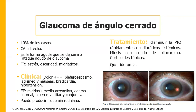El glaucoma de ángulo cerrado es la crisis aguda del glaucoma, que se da solo en el 10% de los casos. Se da por una cámara anterior estrecha o canales de drenaje cerrados. Los factores de riesgo son estrés, oscuridad y midriáticos. Hay que tener cuidado porque si instalamos colirios midriáticos como fenilefrina o atropina para hacer un fondo de ojo a un paciente con glaucoma, podemos desencadenarle este ataque agudo.